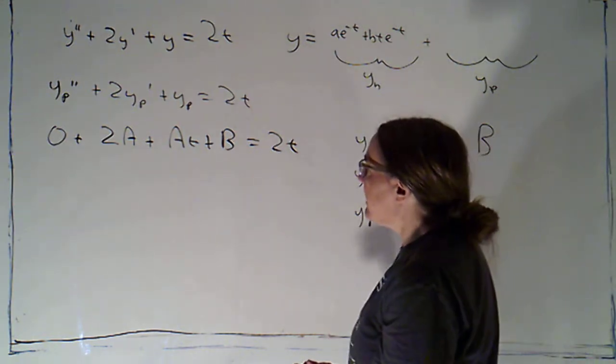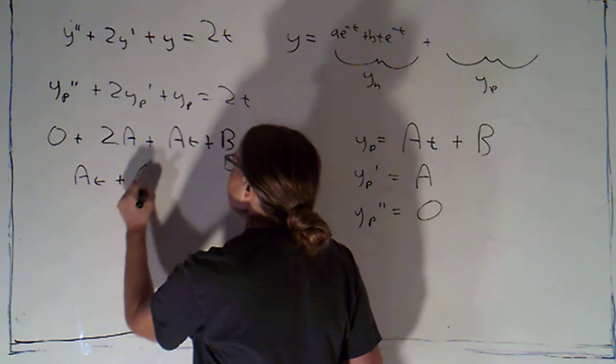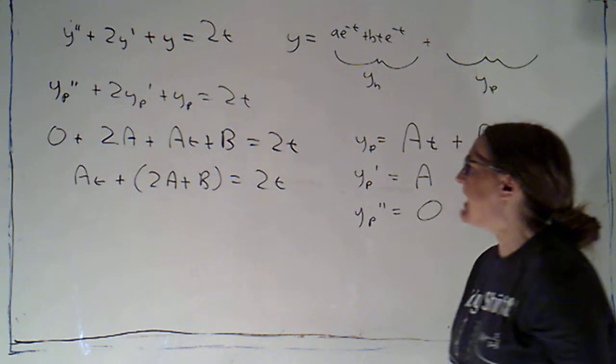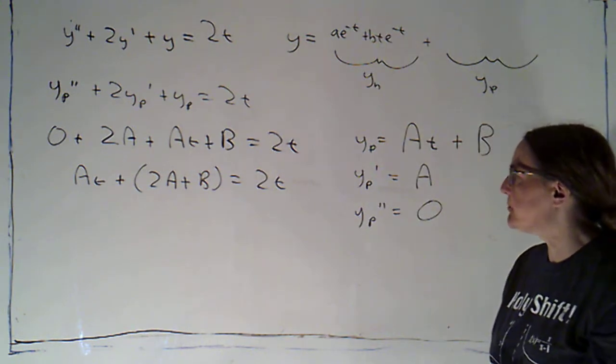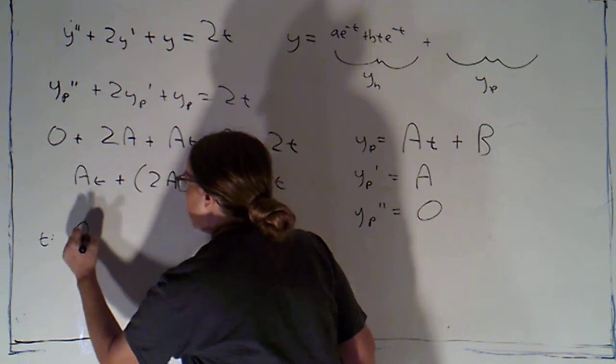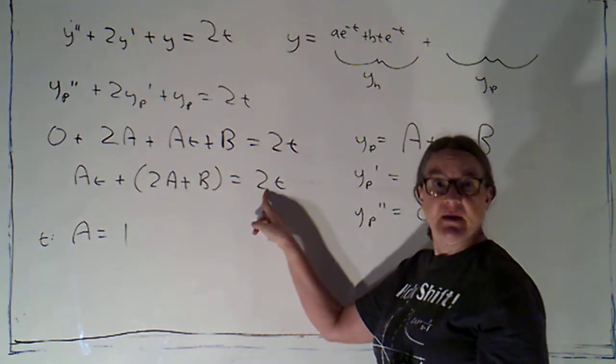So if I take a look at this, I can just rearrange this. That's a copies of t plus 2a plus b is the constant term on the left. And I need that to equal 2t. Okay. So the number of t's has to be the same. So a, which is the number of t's I have here, had better be 2.